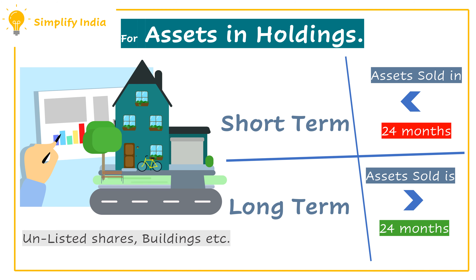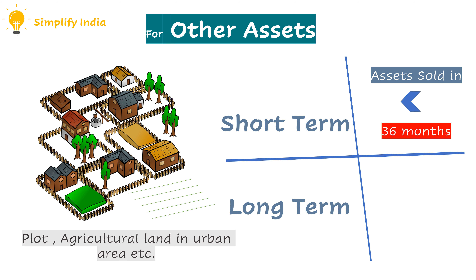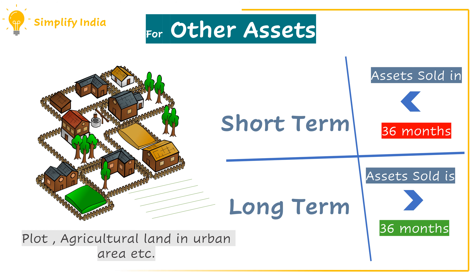In case of other assets like plot and agricultural land in urban areas, if the asset has been sold within the period of 36 months from the date of acquisition, it can be termed as a short term capital asset. Whereas if the asset has been sold after the period of 36 months, it can be termed as a long term capital asset.